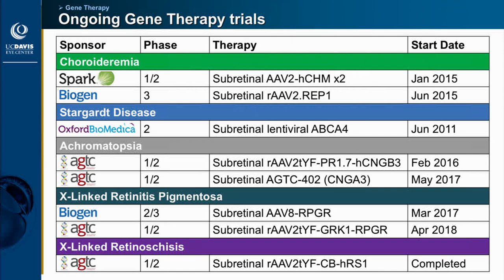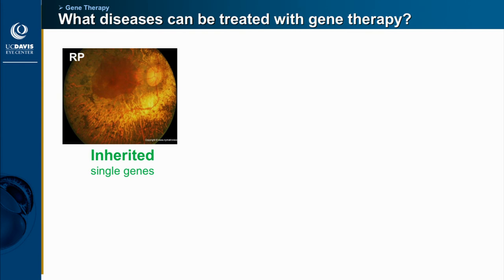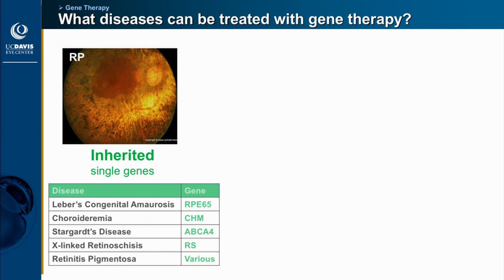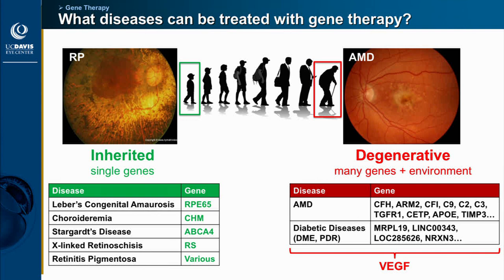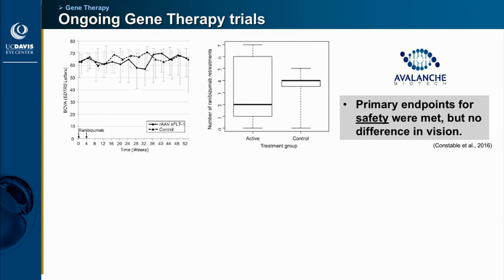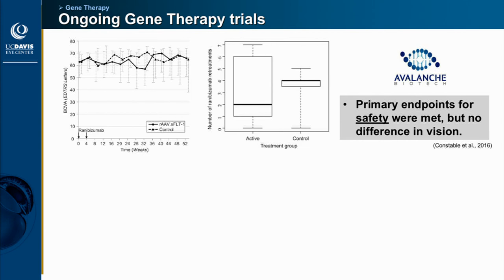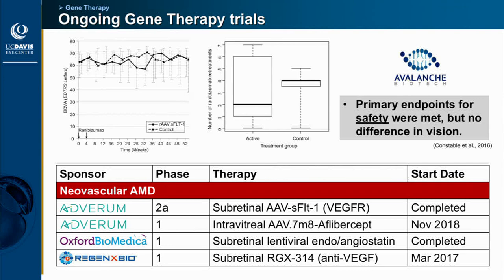Historically we think of gene therapy as being for inherited diseases because they're single-mutation diseases. However, gene therapy can also be used for degenerative diseases. One challenge is the age range — for inherited diseases you want to treat young patients, whereas degenerative diseases usually occur in older adults. Degenerative disease also involves complex interactions of multiple genetic risk factors with environmental factors like age, diet, and smoking. One common denominator for some of these diseases is VEGF, and early AAV trials expressing a soluble VEGF receptor showed efficacy in monkeys but didn't work as well in clinical trials, though those trials had some design issues. Multiple ongoing trials are using alternative strategies and different inclusion criteria.